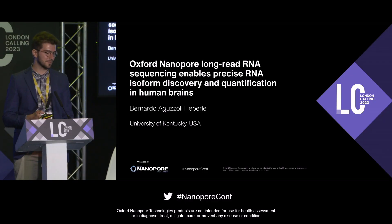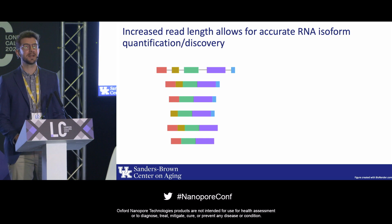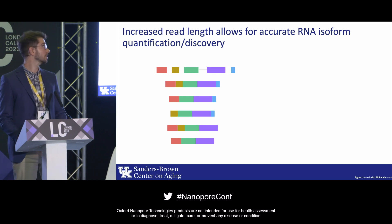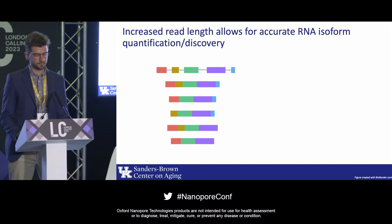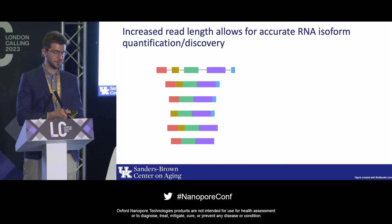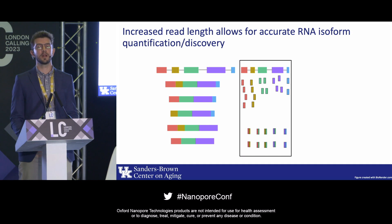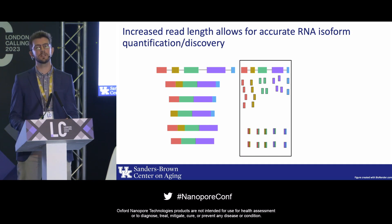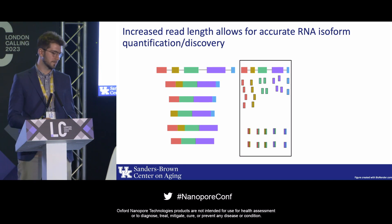Starting with an example: we have a hypothetical gene with five exons and five RNA isoforms. If we use short-read sequencing, the readout shows small fragments aligned to the different exons on the gene. This is great for gene-level expression, but it gets tricky if you're trying to do RNA isoform-level expression.